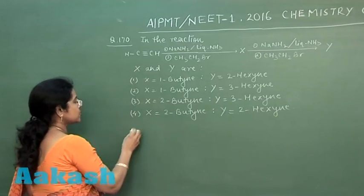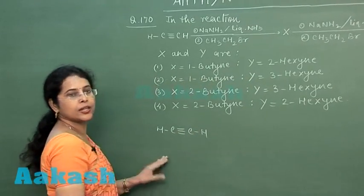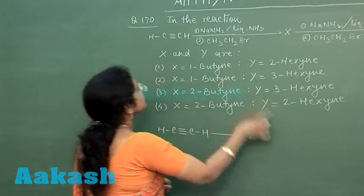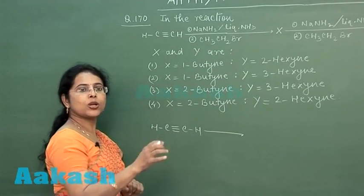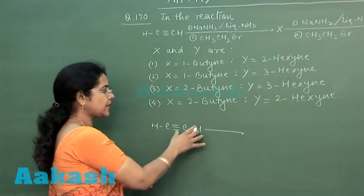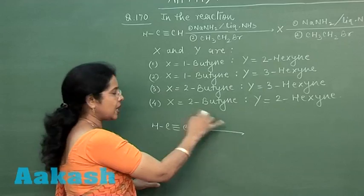Let us try the question. This compound is ethane. First step reaction is with sodamide in liquid ammonia. Sodamide is a strong base and ethane is acidic in nature, so there will be loss of proton and formation of acetylide ion.